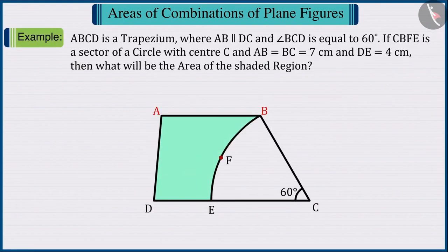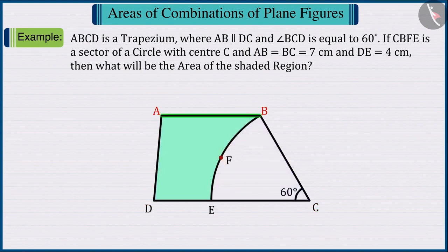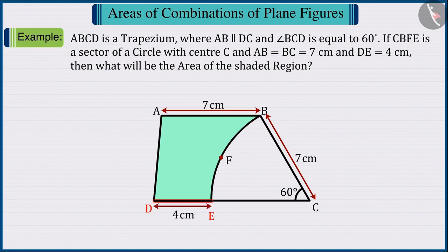In the given figure, ABCD is a trapezium where AB is parallel to DC and the measure of angle BCD is 60 degrees. If CBFE is a sector of a circle with centre C and the measure of AB and BC is 7 cm and the measure of DE is 4 cm, then what will be the area of the shaded region?